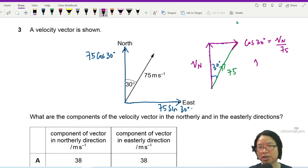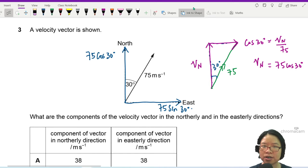So this is how we get the velocity in the northerly direction at 75 cos 30. You take cosine and then you repeat again for sine 30.